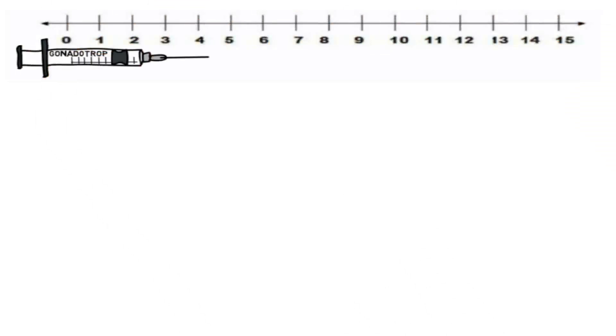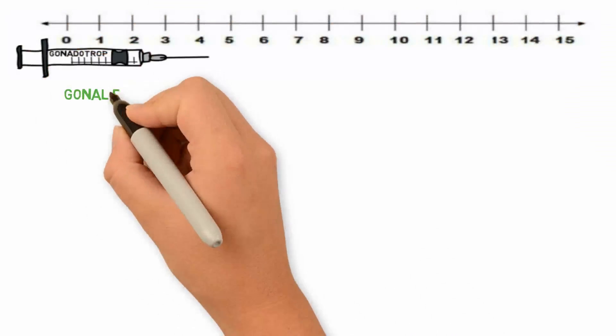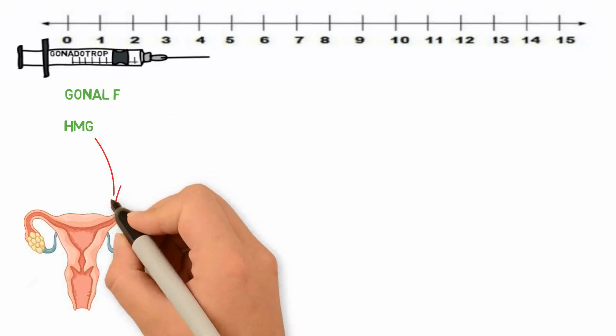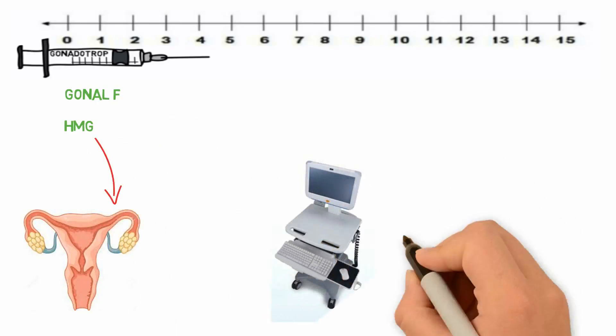Once medical histories have been studied, ovarian stimulation is the first step. It starts from the onset of menstruation and lasts about 9 days. Its purpose is to obtain an adequate number of good quality eggs.